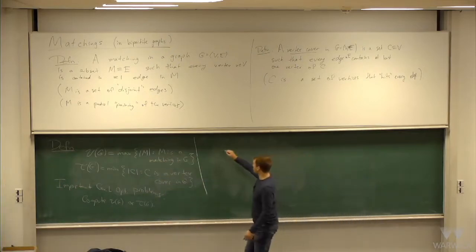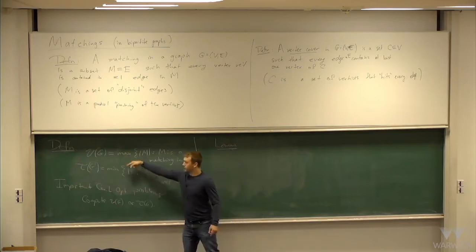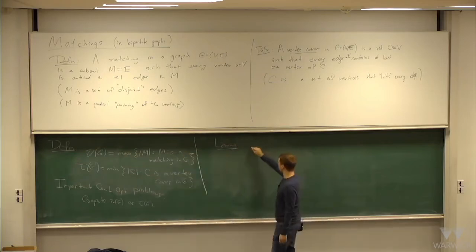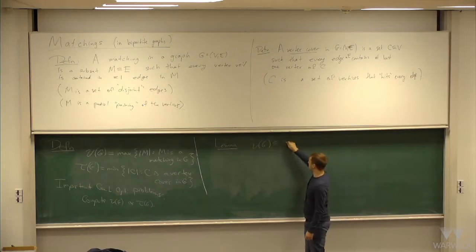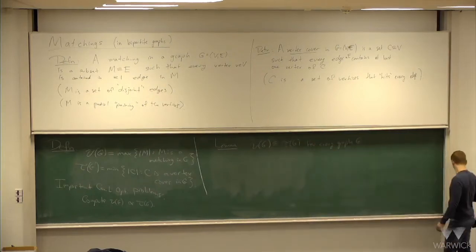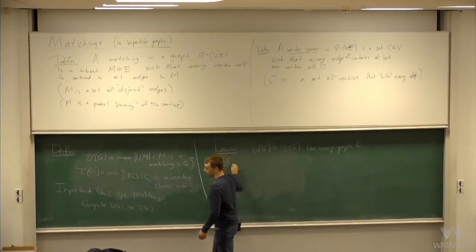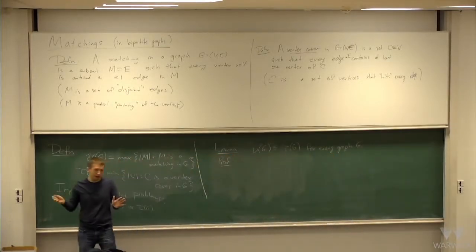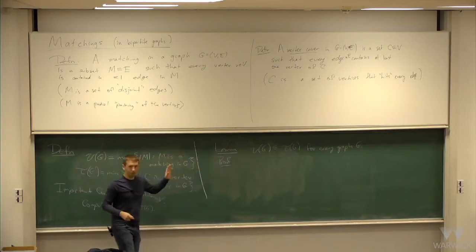Here's a basic lemma which connects these two quantities. The lemma says that you always have nu of G is at most tau of G for every graph G. So if you can compute one of these things, then at least you get a bound on the other one. The proof of this is actually pretty easy.